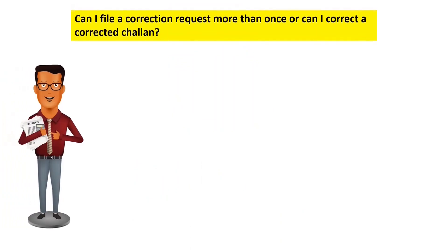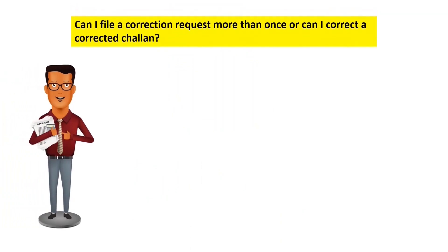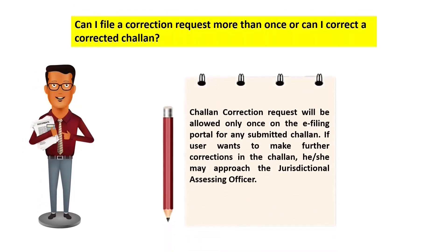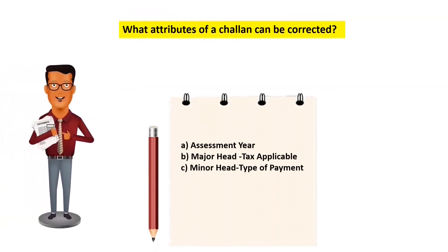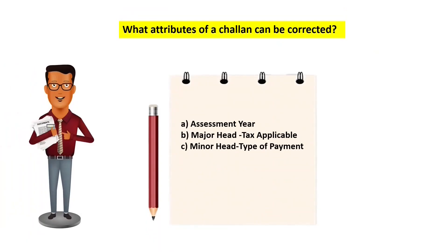It is also important to answer some frequently asked questions on chalan correction. The first question: can I file a chalan correction request more than once, or can I correct a corrected chalan? Please note that the chalan correction request will be allowed only once on the e-filing portal for any submitted chalan. If you wish to make further corrections, you are requested to approach the jurisdictional assessing officer.